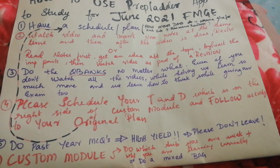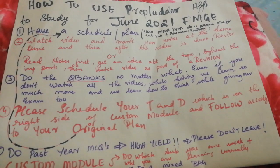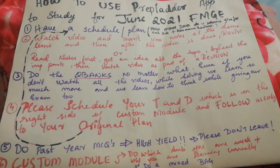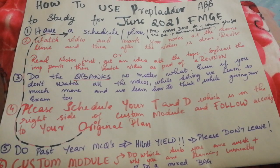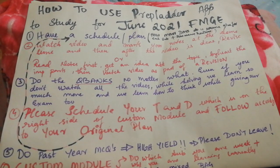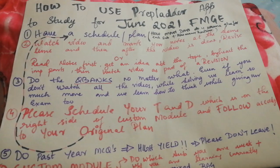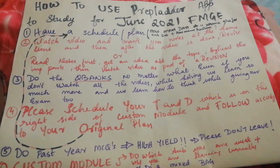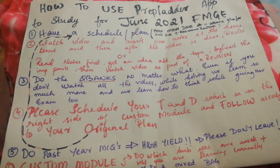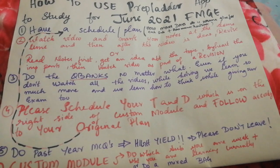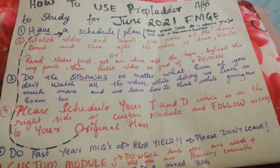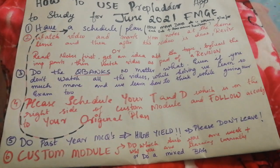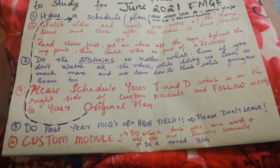Number four is to schedule your TND — Test and Discussions — which is on the right side of your custom module. When you click the prepare button you'll be taken to the video page where there are past exam questions, the custom module, and TND. Click on the TND, schedule it according to your original plan — for example, if you're doing pathology this week, schedule the pathology test for the end of that week. Schedule it accordingly, change the subjects, and stick to it. You need to follow it through; only if you follow it through will it be effective.